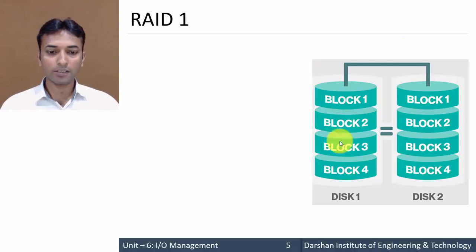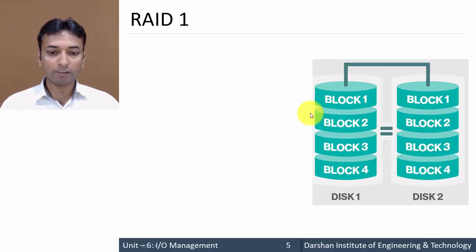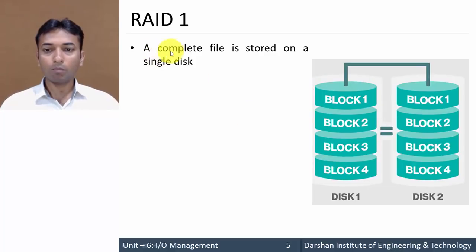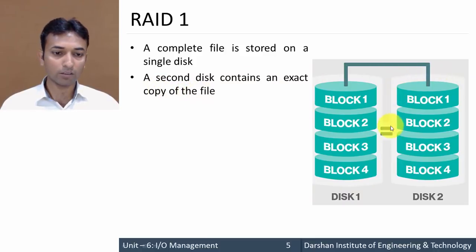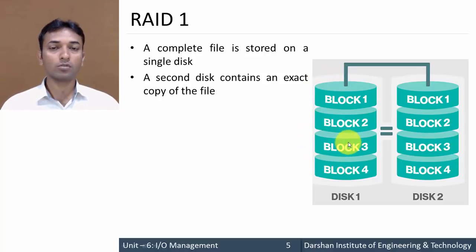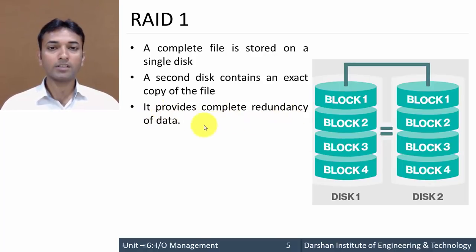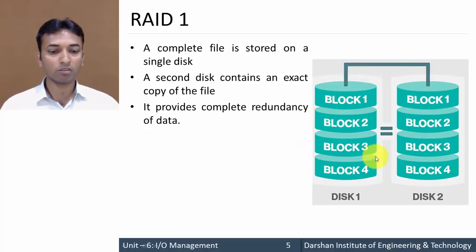Next is RAID 1. The structure has disk 1 and disk 2, where both drives have the same data. A complete file is stored on a single drive, but a second disk contains the exact copy of the file — disk 2 is a carbon copy of disk 1. So your data is placed on two different drives as the same data, providing complete redundancy of data.